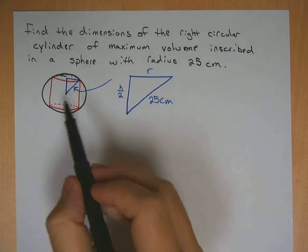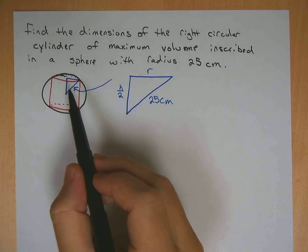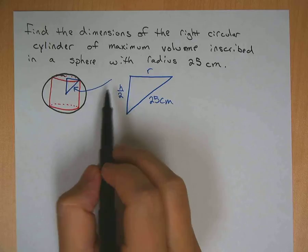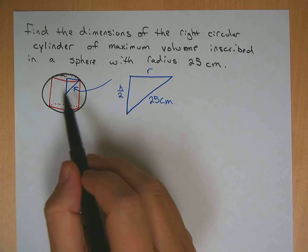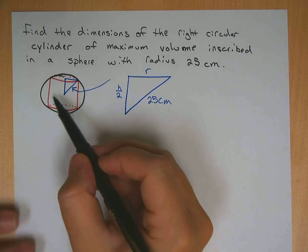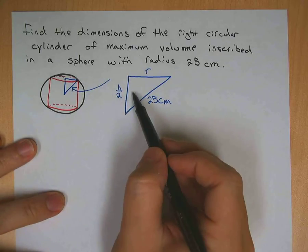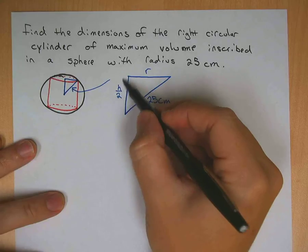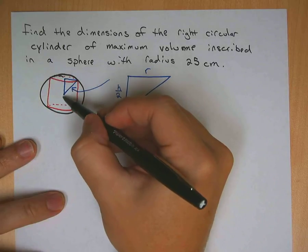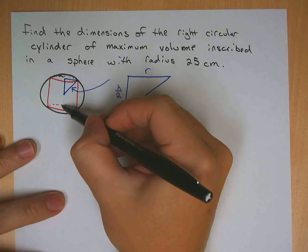So I've got a little picture here to sort of describe the situation that's going on. I know this is only a circle, but imagine it's a sphere. Here's the right circular cylinder inside. And I've got this little triangle that I've pulled out over here. This side would be the height, the whole thing here would be the height of the right circular cylinder.